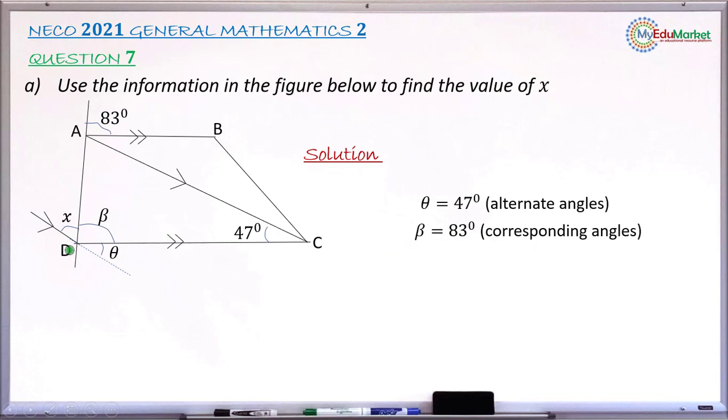Going back to my drawing again, the angle X that I wanted to find, the angle beta, and the angle theta formed angles on a straight line. So addition of the three angles gives you 180 degrees. So I now have X plus beta plus theta equals 180. And the reason is adjacent angles on a straight line.